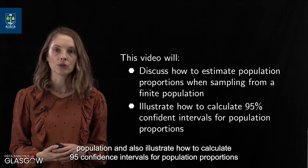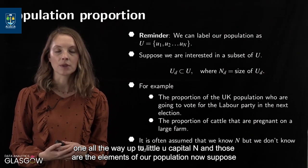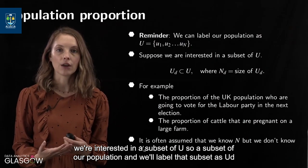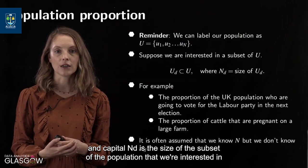Just a reminder: we can label our population as capital U, which is a set of each element little u, one all the way up to little u capital N — those are the elements of our population. Now suppose we're interested in a subset of U, which we'll label as UD, and capital ND is the size of that subset of the population that we're interested in.